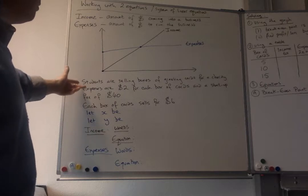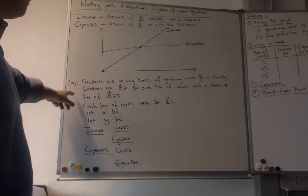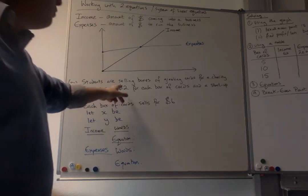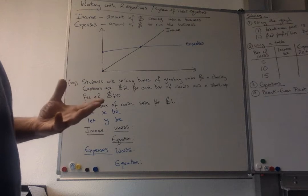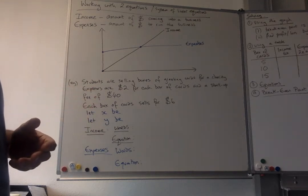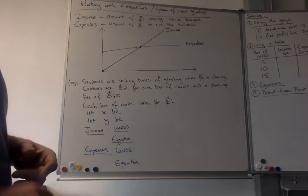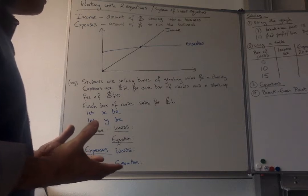But the question we're doing is this: the students have decided to sell boxes of greeting cards for a charity. Their expenses are that it costs $2 to make each box of cards, but there's a start-up fee of $40. It doesn't explain what the start-up fee is, maybe it's some materials, a one-off payment that they need to do to get the materials of what they're going to make with the cards.